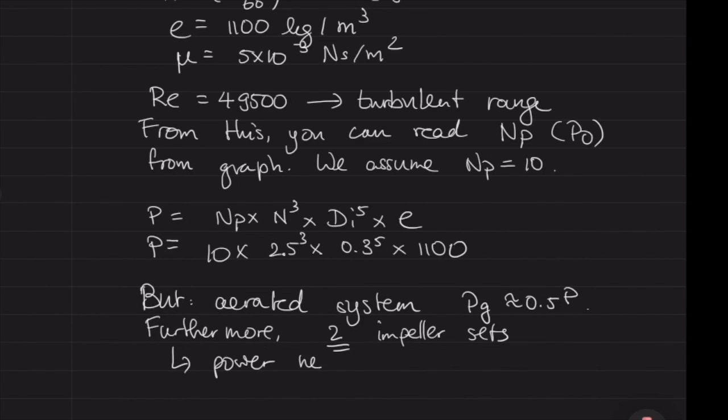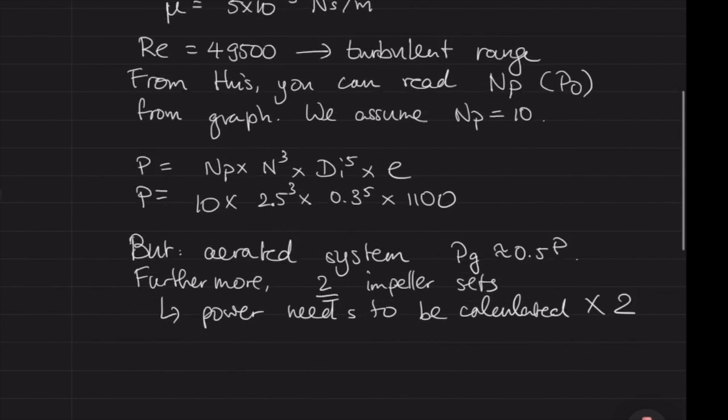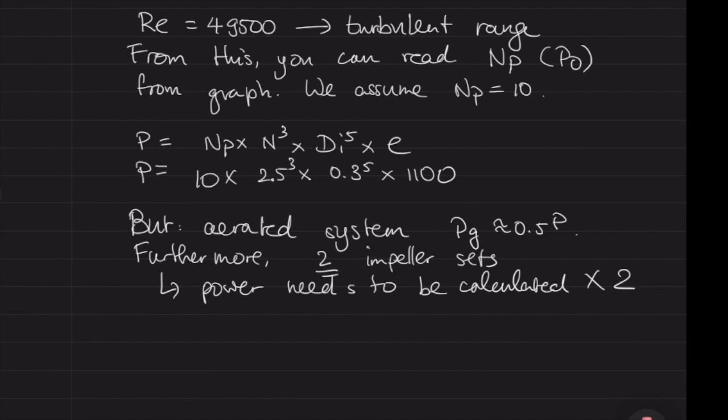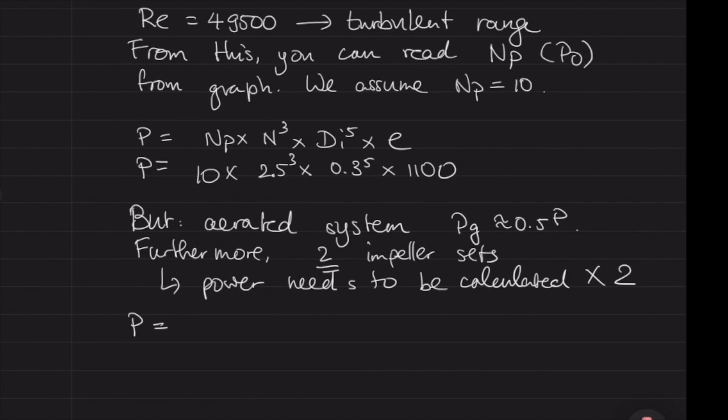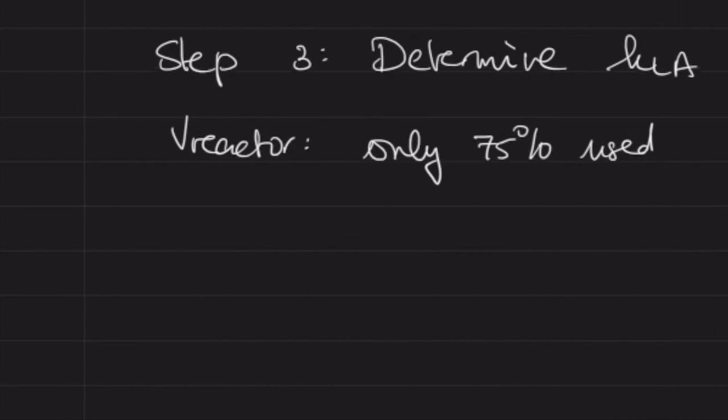It might be given that you work with 40% or 60% of the power, but here we assume it's half. This is important: it's specifically said we have two impeller sets to drive. We multiply the power by half because we only need half to drive an aerated system, but multiply by two because we have two impellers. These factors cancel each other out.